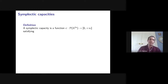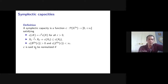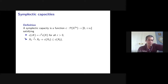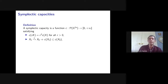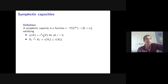Symplectic capacity is a quantitative tool giving obstructions to symplectic embeddings. A capacity c satisfies two key properties: (1) it scales as c(λX) = λ²c(X), making it a two-dimensional invariant even in higher dimensions; (2) if X₁ symplectically embeds into X₂, then c(X₁) ≤ c(X₂). The volume would be an obstruction too, but it doesn't satisfy property (1) in dimension higher than two.